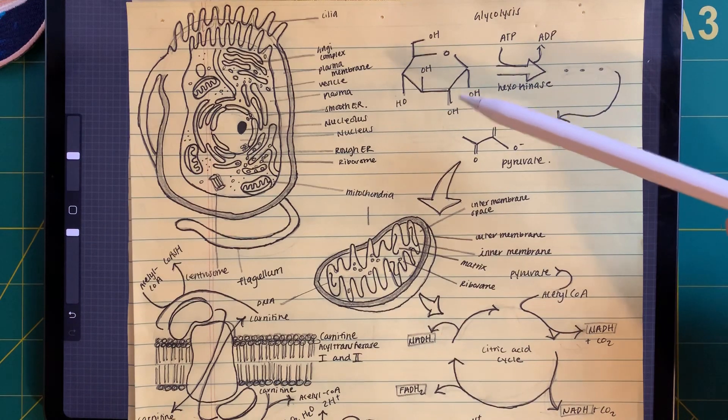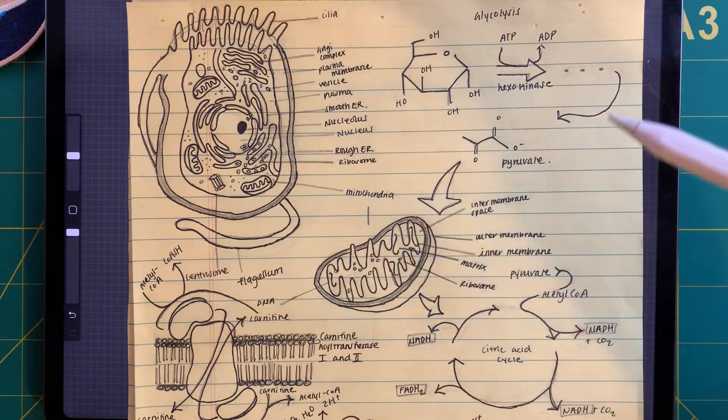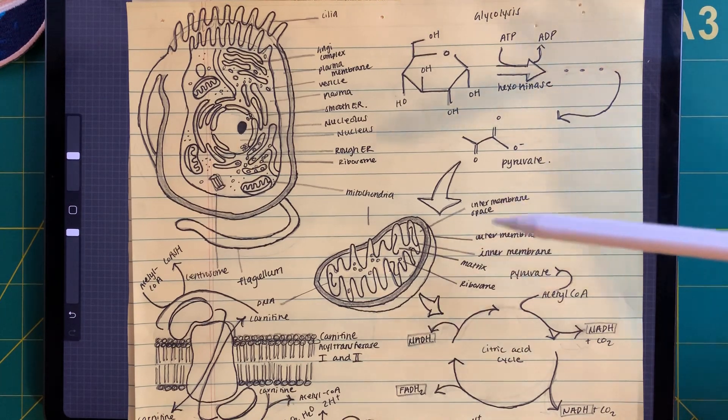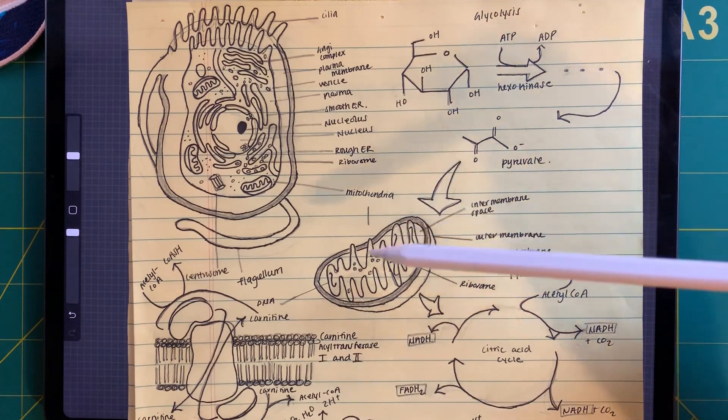So we have one glucose molecule that's going to enter the animal cell. We're going to go through glycolysis. We're going to form pyruvate. Pyruvate is going to go inside the mitochondria, which is an organelle in the animal cell.